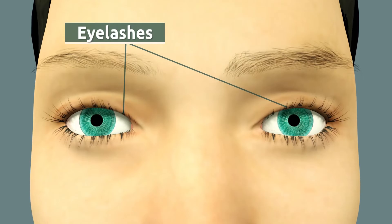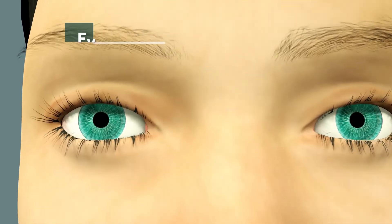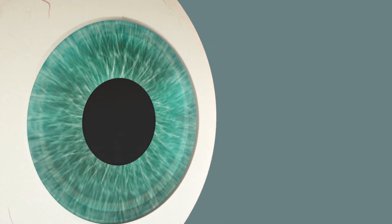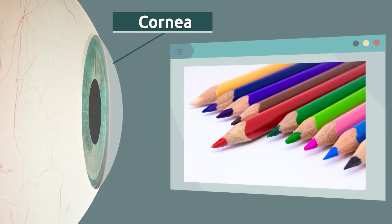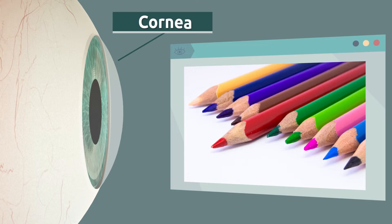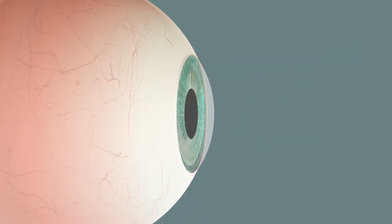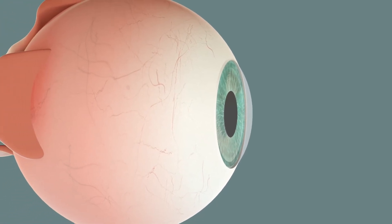The cornea is a transparent layer that helps our eye to focus on objects. It is a very important part of the eye, but it's hardly visible because the cornea is a semi-transparent tissue.